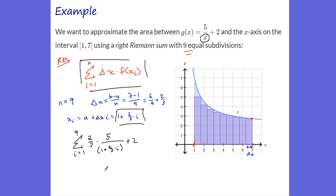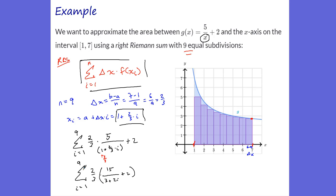We can clean this up. Getting common denominators, 1 becomes 3/3, so we have 3/3 plus 2/3. The 3 in the denominator of the denominator moves to the numerator: 2/3 times 3 on the denominator becomes 15 in the numerator. So we end up with the summation from i=1 to 9 of 15 over (3 + 2i + 2). That's the value — entering this in your calculator adds up all those rectangles.